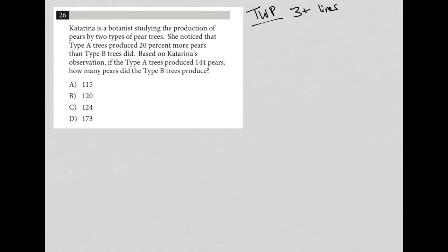Katarina is a botanist studying the production of pears by two types of pear trees. She noticed that type A trees produce 20% more pears than type B trees did. This is a perfect place to stop.